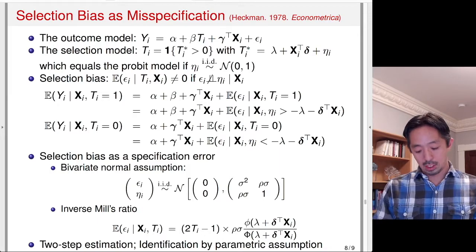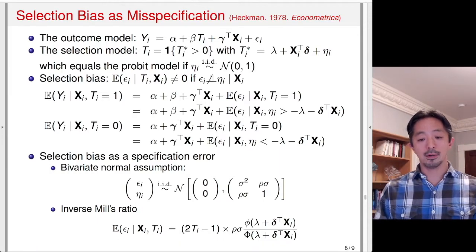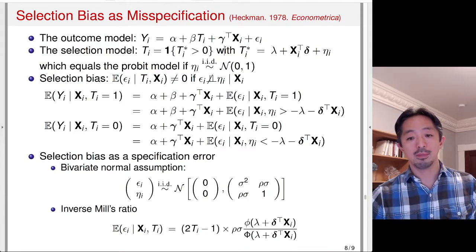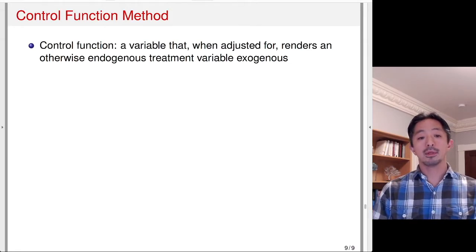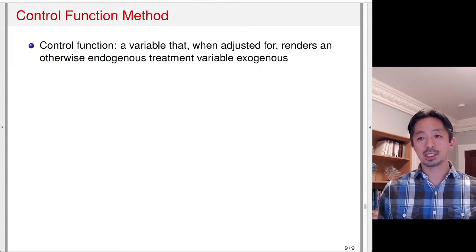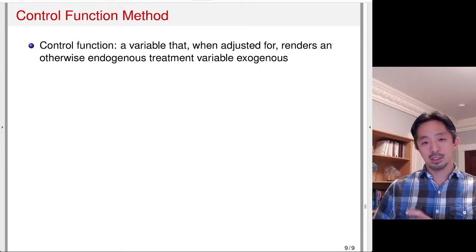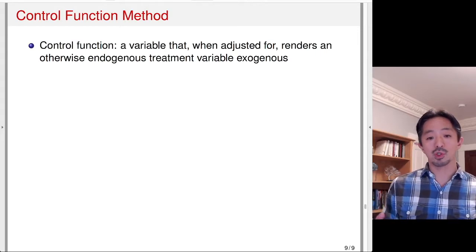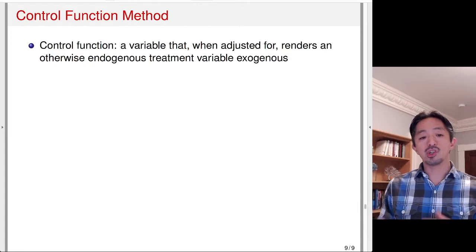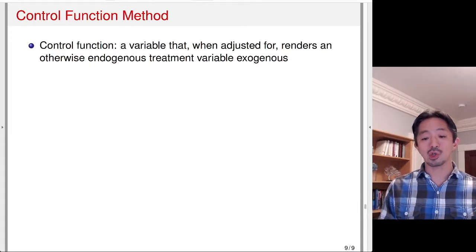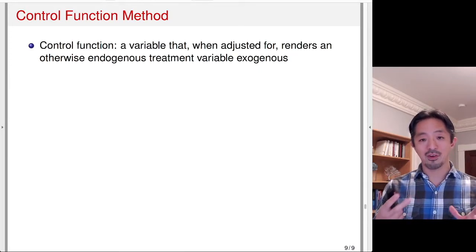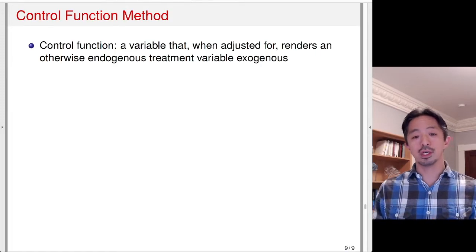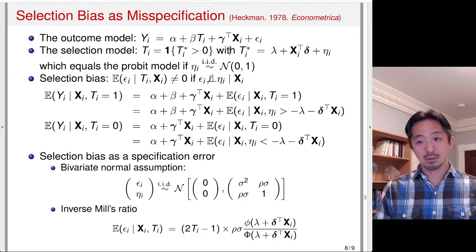I will briefly mention an extension of this type of method developed in the literature: the control function method. The idea generalizes the Heckman selection model — recall that Heckman's approach computed the inverse Mills ratio as an additional variable to include. This variable, when controlled for, renders an otherwise endogenous treatment variable exogenous. Once you include the inverse Mills ratio, the treatment variable that suffered from unobserved confounding becomes exogenous.